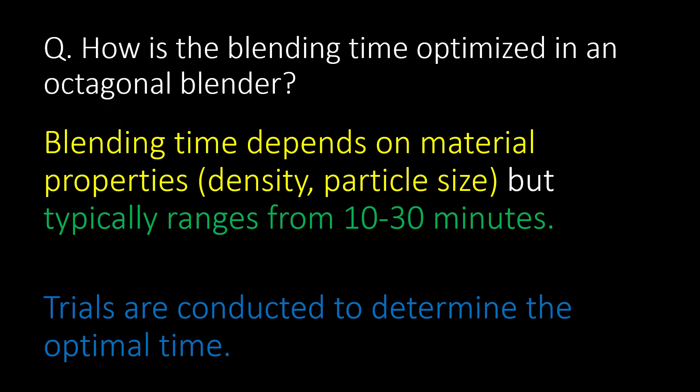How is blending time optimized in an octagonal blender? Blending time depends on material properties such as density and particle size, but typically ranges from 10 to 30 minutes. Trials are conducted to determine the optimal time.